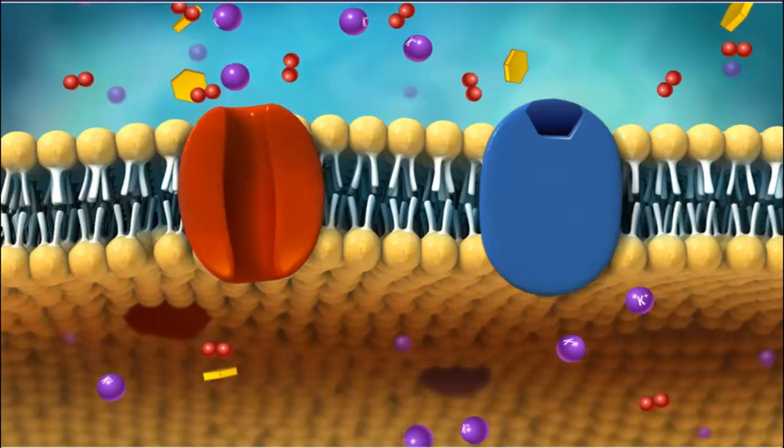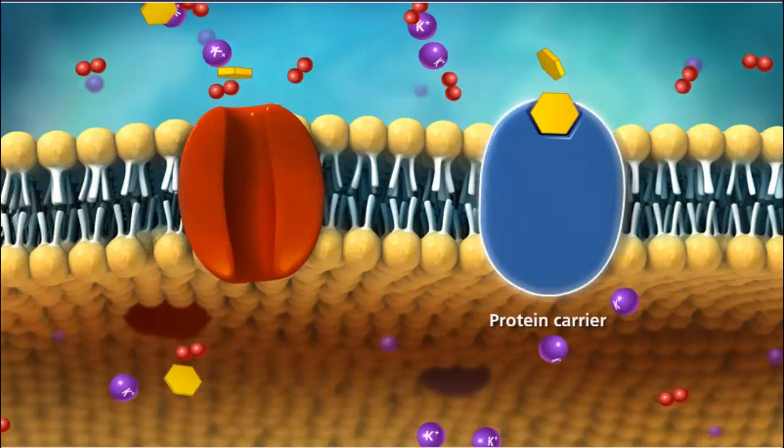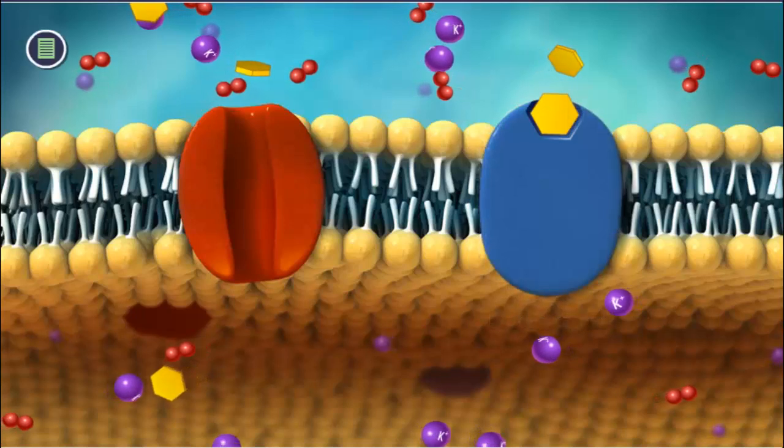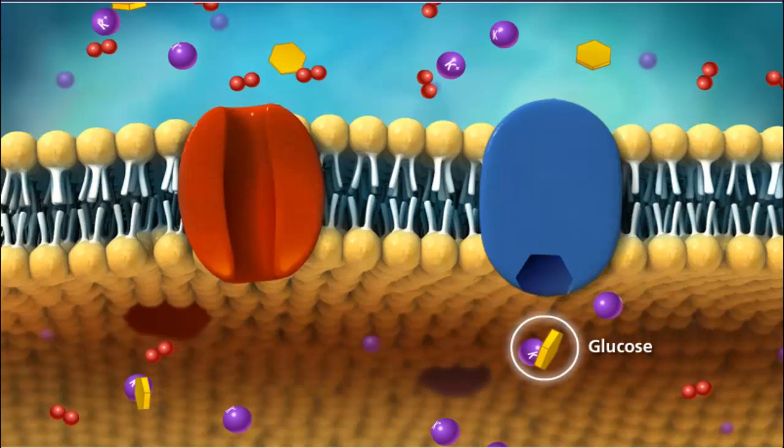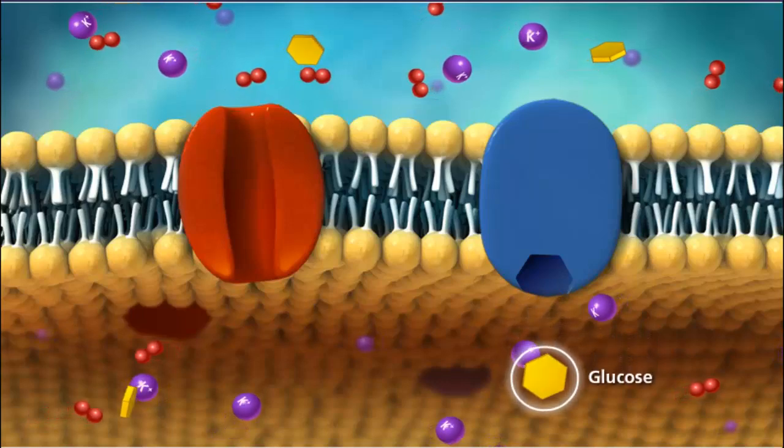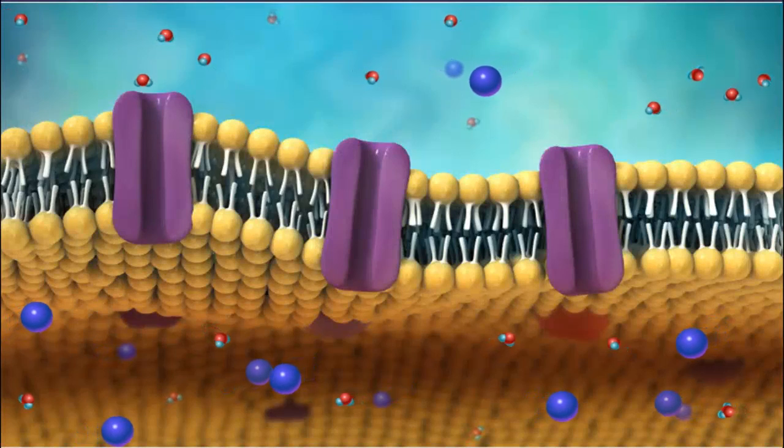The transport of other substances requires a special carrier that will bind the substance on one side of the membrane, which triggers a conformation change in the protein carrier, causing it to release the substance on the other side. When the substance being moved across the membrane is water, the process is called osmosis.